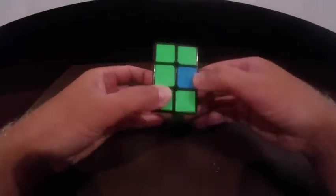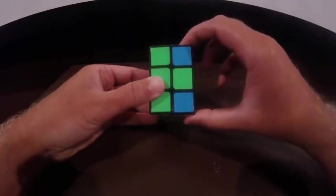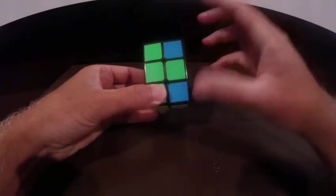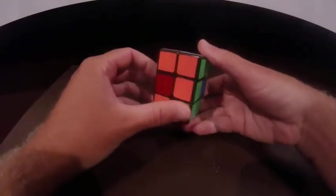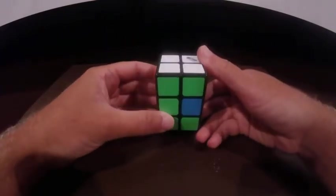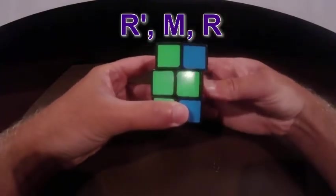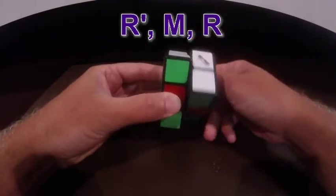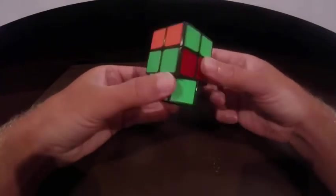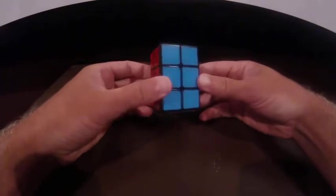And it just so happens it's the green again, where if I do an R prime, then I actually match up the two colors. So now that you have this, we can just go back and do that one that I showed you earlier, which is an R prime, a middle, and then an R. And then like I said earlier, sometimes that will solve it. In this case, it did.